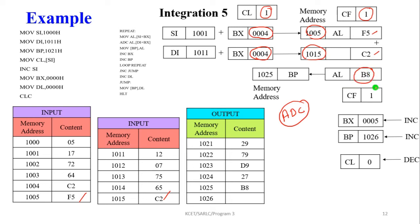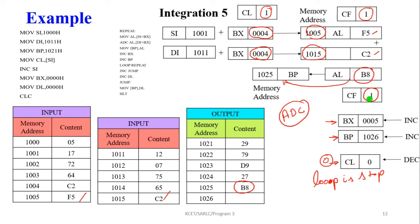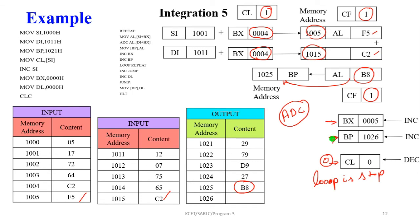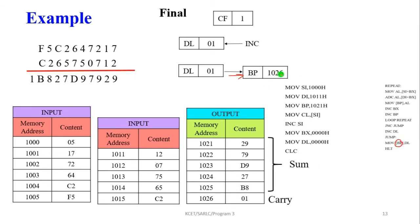After the addition, the result is B8, and the carry signal is also present. B8 is moved into memory location 1025. Since the carry flag becomes 1, byte pointer and result pointer are incremented, and CL is decremented to 0. The loop ends. Now we check the carry flag — it is 1. The DL register value is incremented by 1, and this incremented DL value is moved into base pointer memory location 1026. This is the carry value.